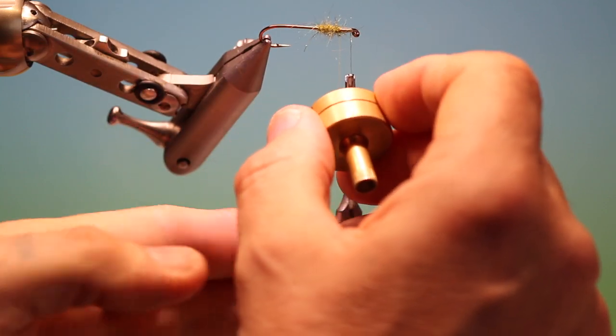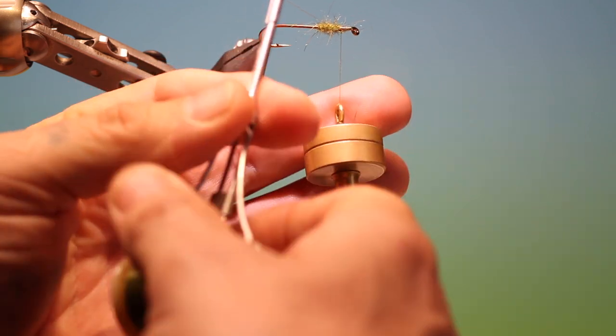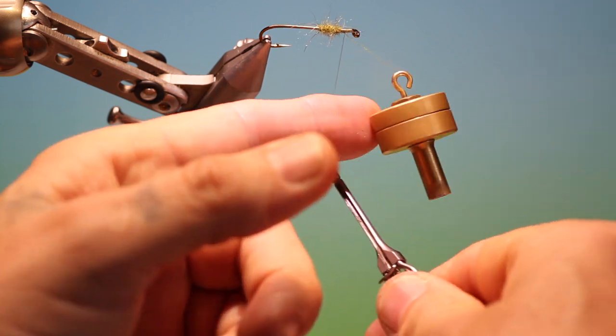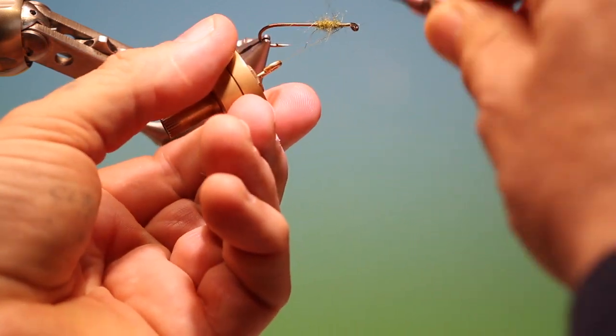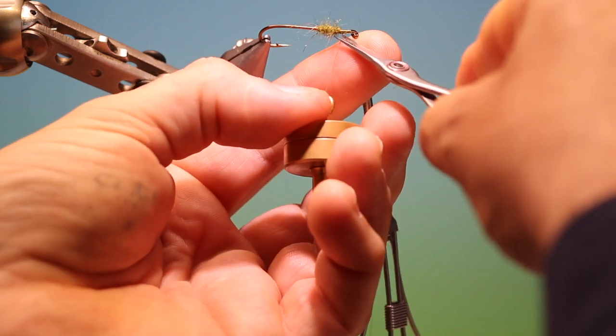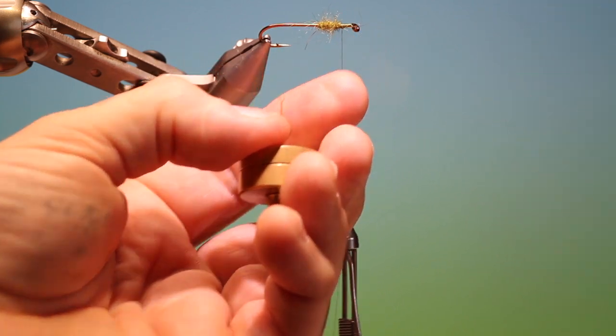Once you've come to the end, we go over the dubbing loop to lock it off two or three times, then hold it back and go two or three times again. Then we can remove it.